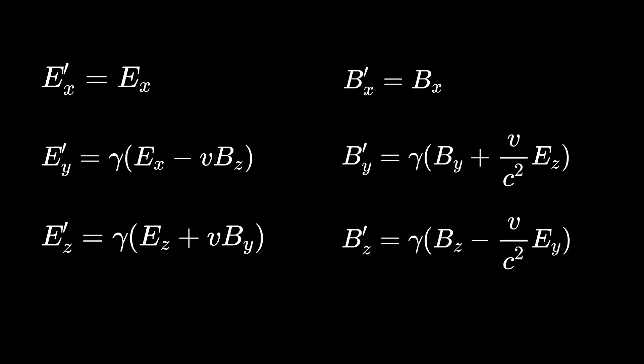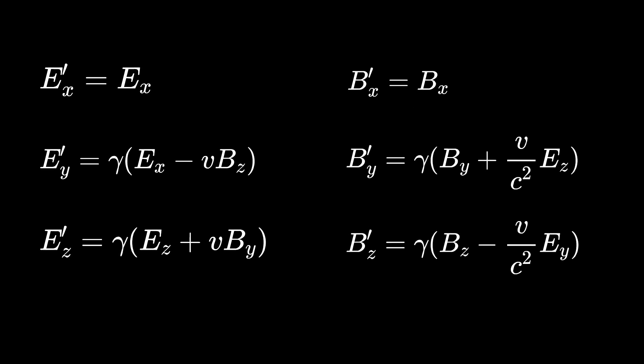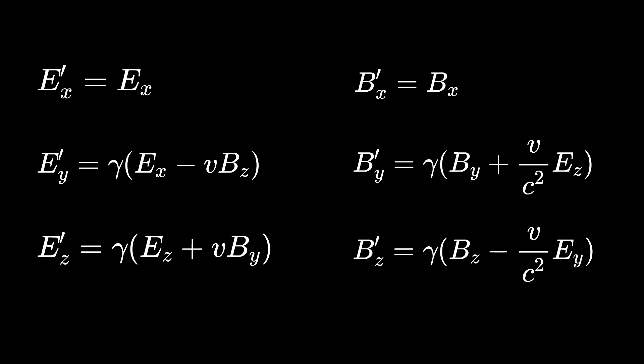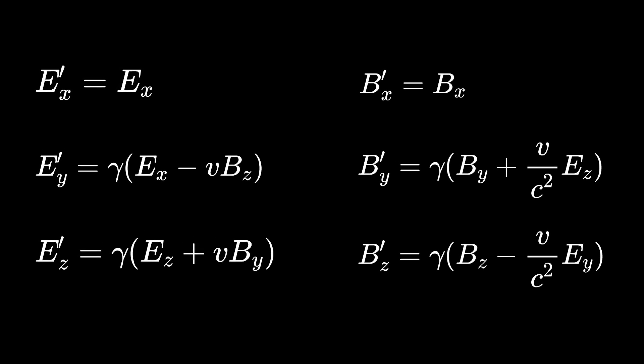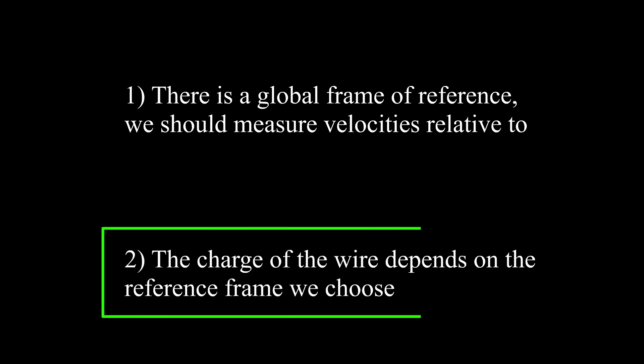If you apply these transformations to the electric and magnetic fields, you find that they mix — which suggests the second resolution is correct and that electric charge density depends on the frame of reference. But why should charge density depend on the observer? Henrik Lorentz didn't give any physical explanation for these transformation rules; he thought of them as a purely mathematical construct.